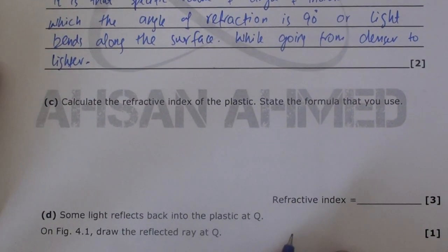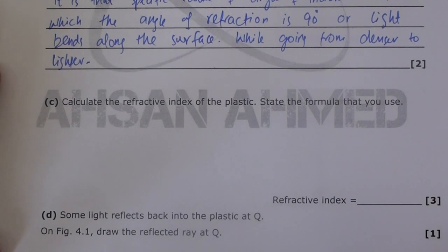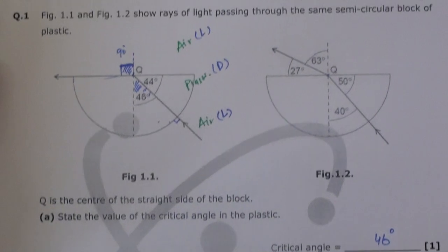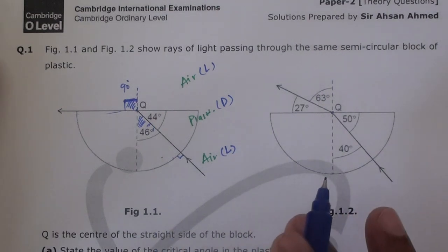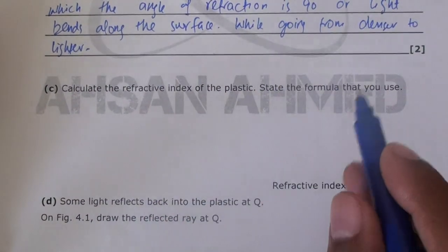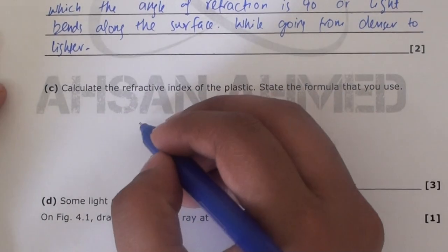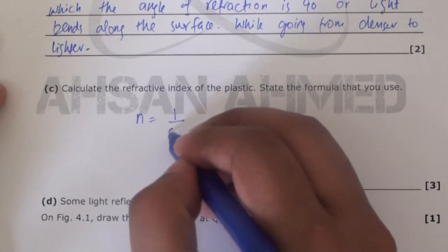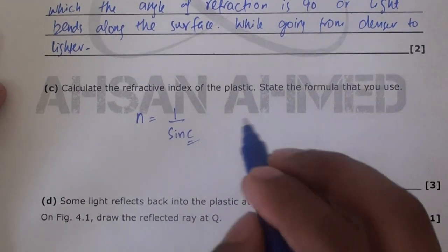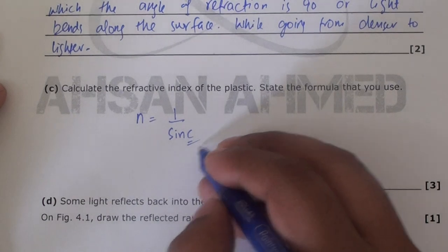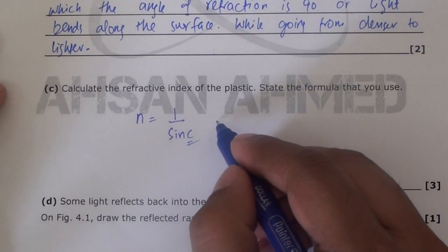Now let's move to the next part, which is calculate the refractive index of the plastic and state the formula you use. Here you can use both figures - Figure 1.1 or Figure 1.2. I'll use one formula to avoid confusion, using Figure 1.1, which is pretty easy. From Figure 1.1, the formula I'm going to use is n equals 1 over sin c. This is the formula to find refractive index when you know the critical angle.